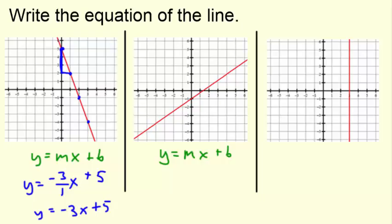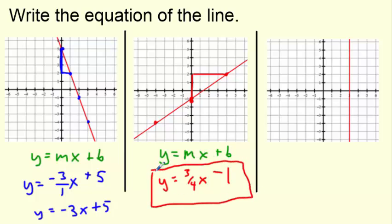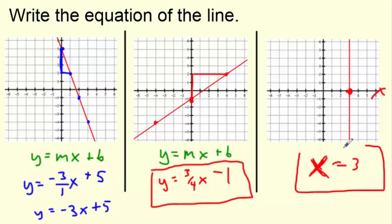Let's do the next one. Write out y equals mx plus b and find your two pieces. Where's the y-intercept? It's at negative 1. Now count: rising up 1, 2, 3 and running over 1, 2, 3, 4 — so it's 3 fourths. The equation is y equals 3 fourths x minus 1. I also threw in a special case: a vertical line. Ask yourself, is it y equals 3 or x equals 3? It's a vertical slope, and it touches the x-axis, so it's x equals 3. That's the equation of that line — a vertical line, special case.